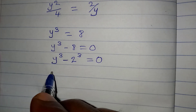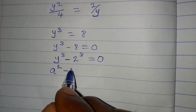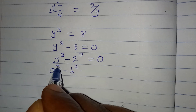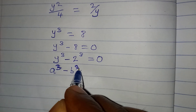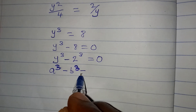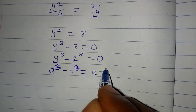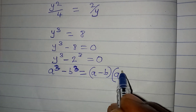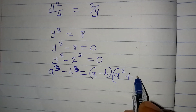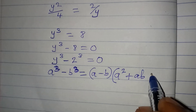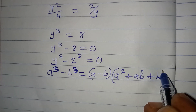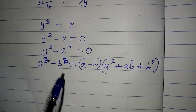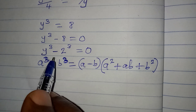Now I want us to use a standard identity: a cubed minus b cubed is the same as (a minus b) times (a squared plus ab plus b squared).